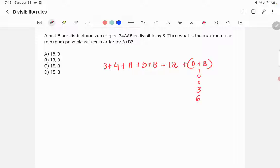Similarly, when A plus B is equal to 6, A plus B is equal to 9, A plus B is equal to 12, 15, or 18, then that number will be divisible by 3.